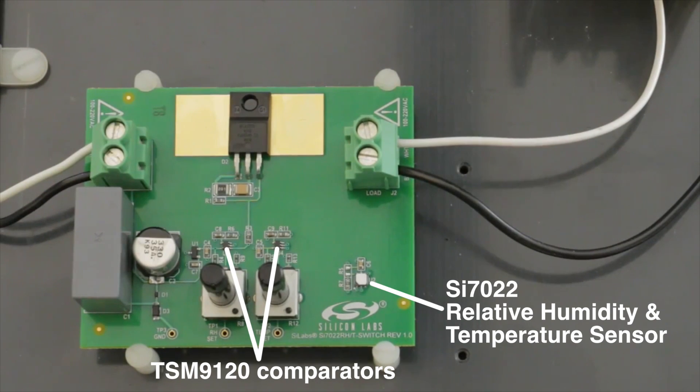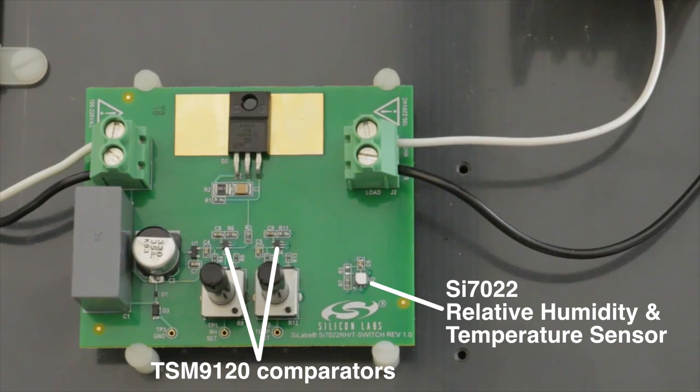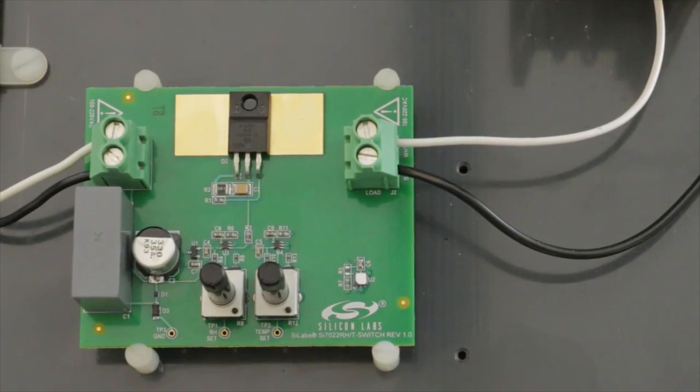The reference voltage determines a humidity and temperature threshold, and if the measured humidity or temperature exceeds that threshold, the line voltage is turned on or off.